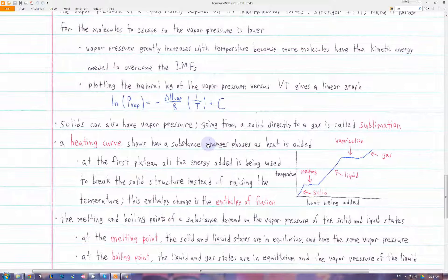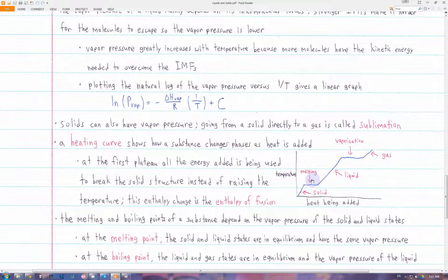A heating curve shows how a substance changes phases as we keep adding more heat. The x-axis is the heat being added and the y-axis is the temperature of the substance. We start out as a solid, and as we add more heat the temperature increases until it hits the first plateau, which represents the substance melting — going from solid to liquid. The temperature doesn't change while it's melting because all the extra energy is used to break up the structure of the solid, breaking some of the intermolecular forces to form the liquid state. The energy needed to melt the substance is called the enthalpy of fusion.